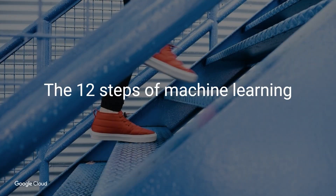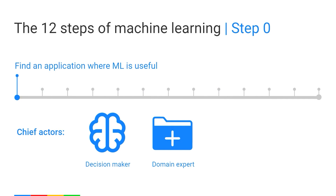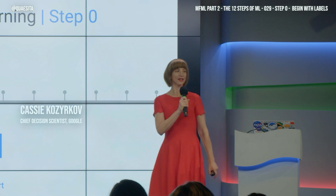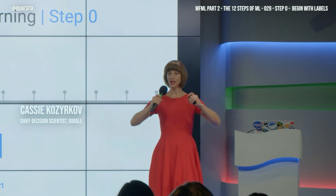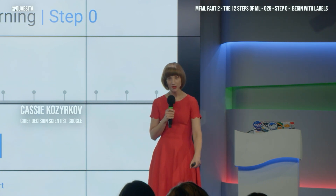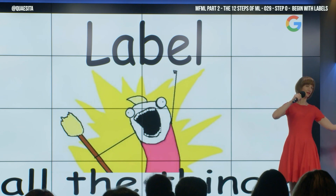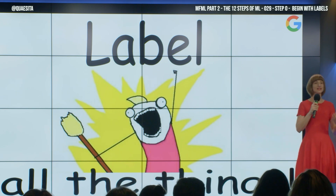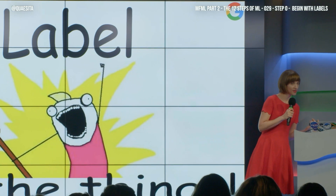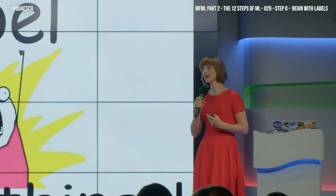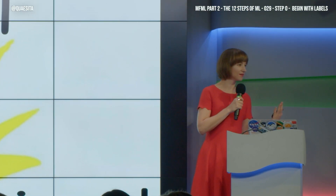Let's dive into our 12 steps, starting with step zero: should we even be using machine learning? To think about this, we need to be fully aware of what machine learning is about, which is labeling all the things. We are doing this in order to label things. If we cannot even think of what things need labeling, we're going to have a problem. So you need to think about which things you need labeled — that is your first step.